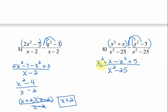If I combine my like terms, x squared minus x squared would just cancel out. And that leaves me with x plus 5 over x squared minus 25. This is a difference of perfect squares. So I need to factor it into x plus 5, x minus 5.